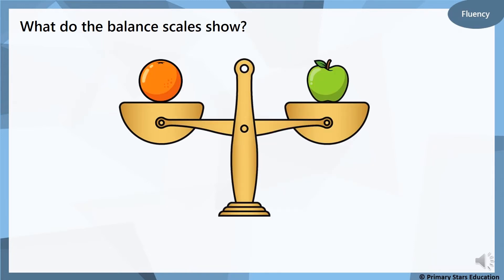What do these balanced scales show? We've got an orange and we have got an apple. What can you notice there? You can pause and discuss it at home if you need to. These balanced scales show that the apple and the orange weigh the same. They are level.